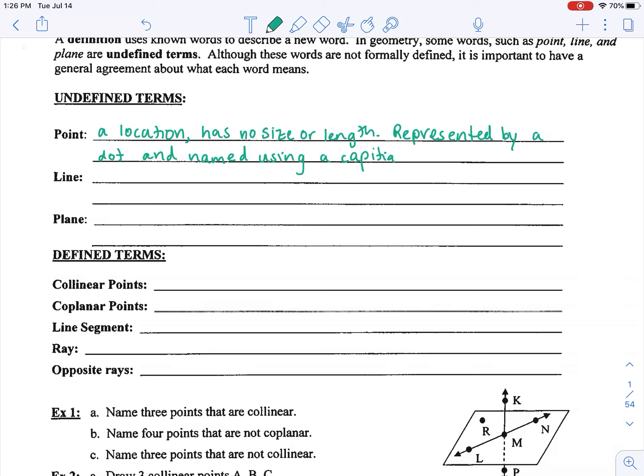It's going to become increasingly important that we're able to use proper notation when describing concepts. In this example, we'll have a dot represented by the capital letter A, and we would read that as point A. A line is a connected set of infinitely many points that extend in opposite directions.